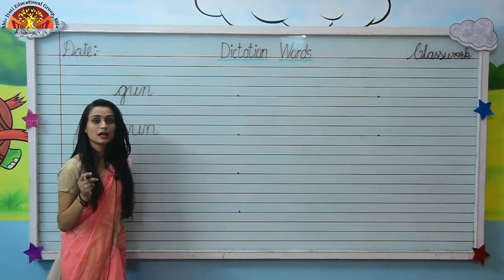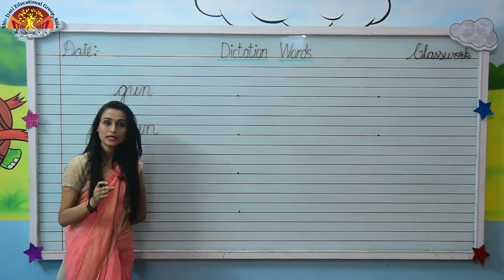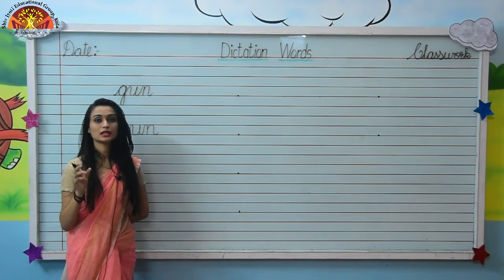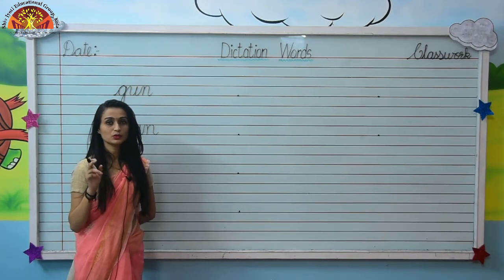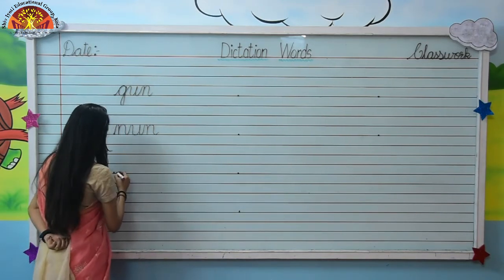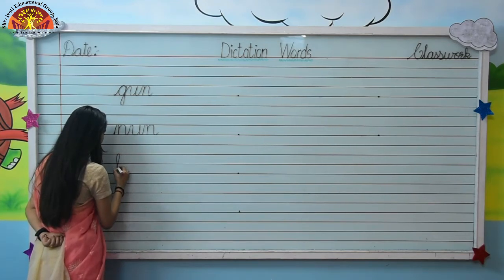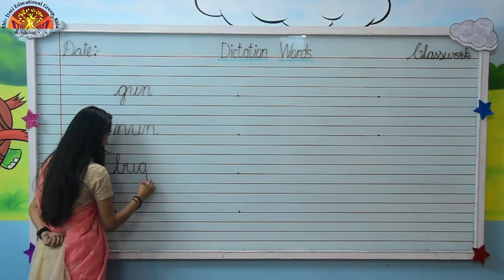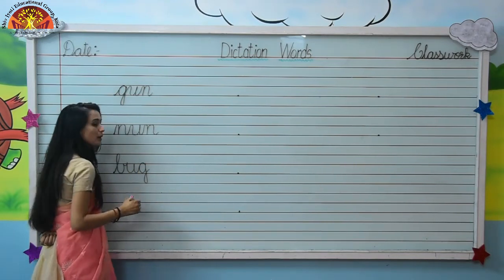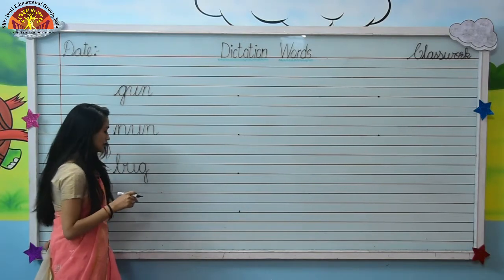Next is bug. B-U-G, bug. So write: B-U-G, bug. Yes, kids.